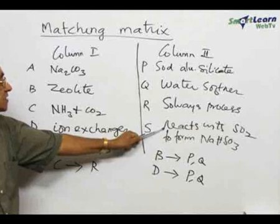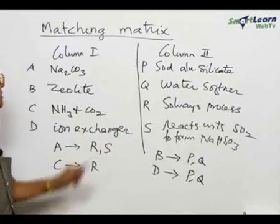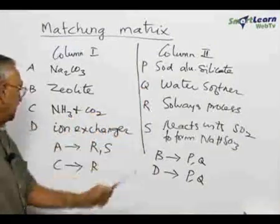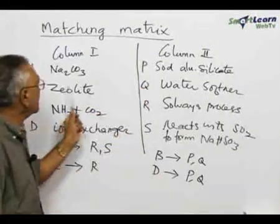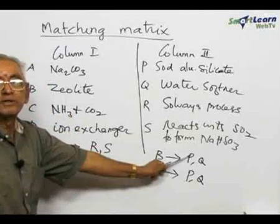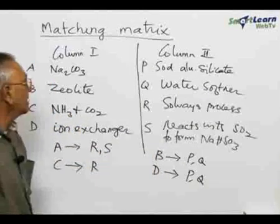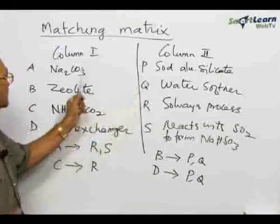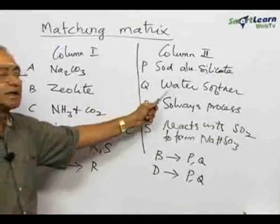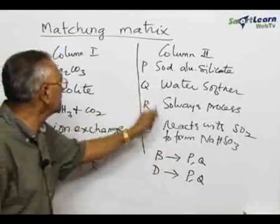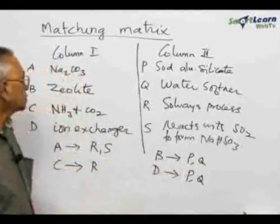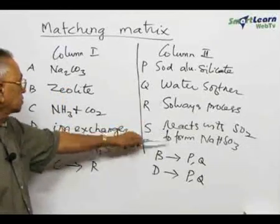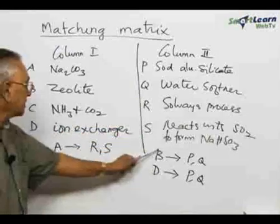A matches with the Solvay process (R) and reacts with sulfur dioxide (S). Coming to the next one — zeolite. Zeolite is actually sodium aluminum silicate, so B matches with P. Zeolites are also used as water softeners; they are used for ion exchange and water softening. Therefore B also matches with Q. Zeolite has nothing to do with the Solvay process or sulfur dioxide, so R and S do not come as part of B.